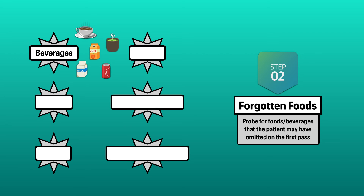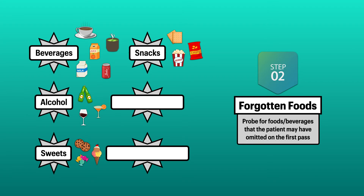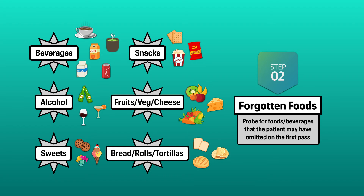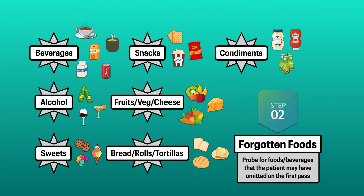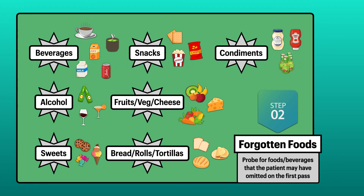The six categories of foods asked for in the automated multiple-pass method include beverages like coffee, tea, milk, juice, and soda; alcohol in the form of beer, cocktails, and wine; sweets like candy, cookies, and ice cream; snacks like crackers, popcorn, and chips; fruits, vegetables, and cheese; and bread, rolls, and tortillas. One additional category to include is condiments like ketchup, mayonnaise, and salad dressing. These are all items that patients tend to forget, yet they can have a massive effect on the overall diet pattern and should be accounted for prior to moving on.